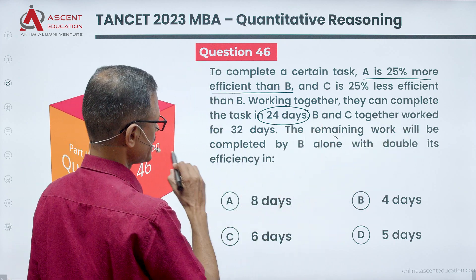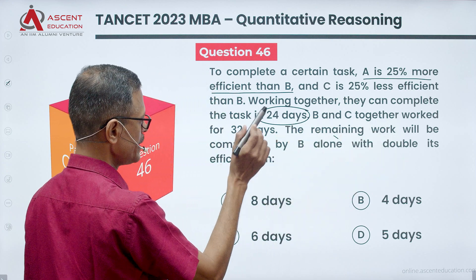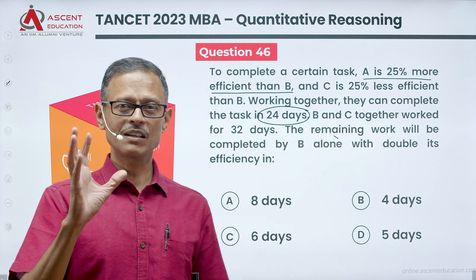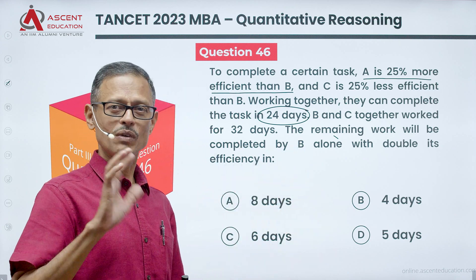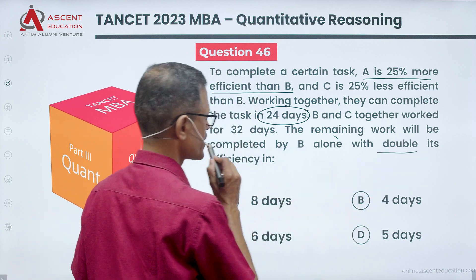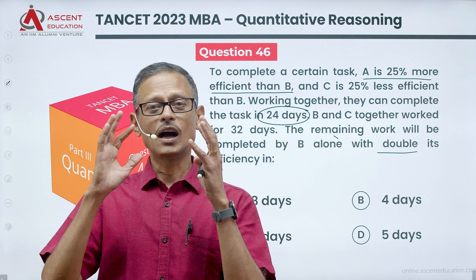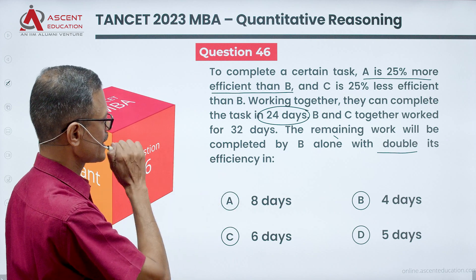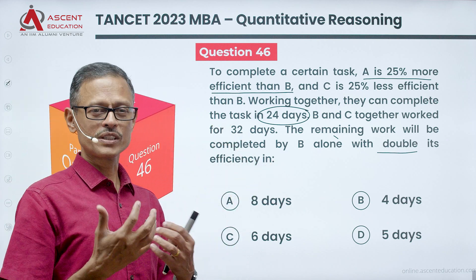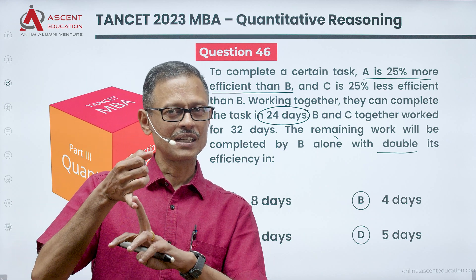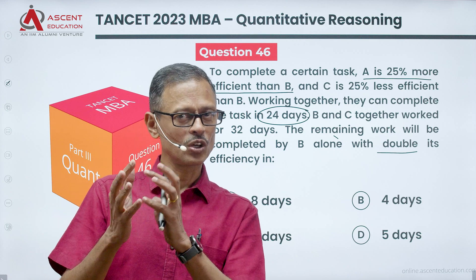B and C together work for 32 days, and the remaining work will be completed by B alone. So there are multiple steps. Start with the efficiency relationships. Do it one step at a time.